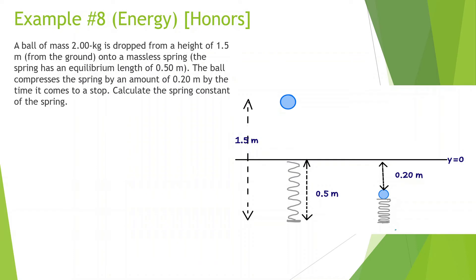A ball of mass 2 kg is dropped from a height of 1.5 meters from the ground onto a massless spring. The spring has an equilibrium length of 0.5 meters. The ball compresses the spring by 0.2 meters by the time it comes to a stop. Calculate the spring constant. I like to make the zero line at the lowest point the object is going to reach. So the zero line is at the bottom. This means the height is 0.2 plus 0.5 plus some portion, giving 1.2 meters above the lowest point.